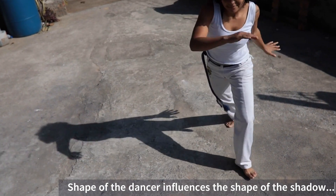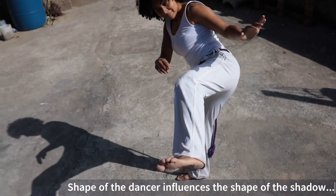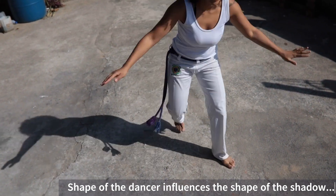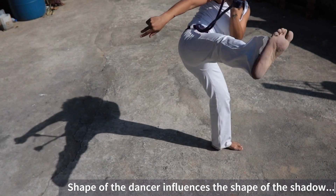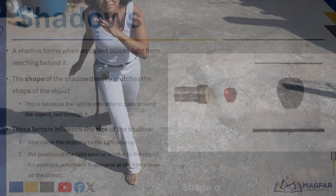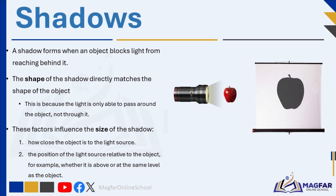Several factors influence the size of the shadow: first, how close the object is to the light source; and second, the position of the light source relative to the object — for example, whether it is above or at the same level as the object.